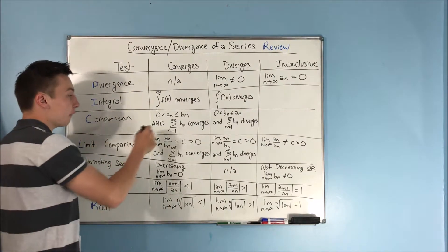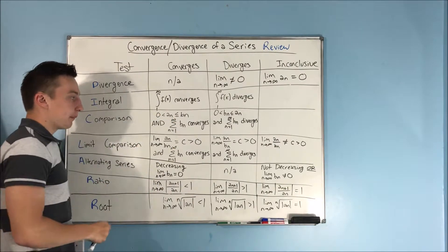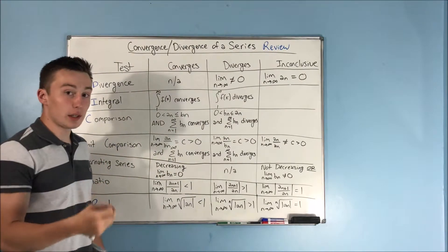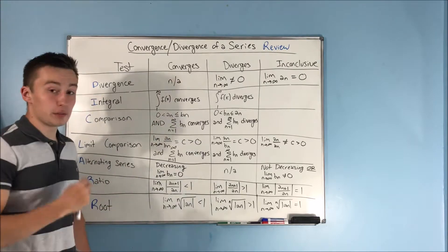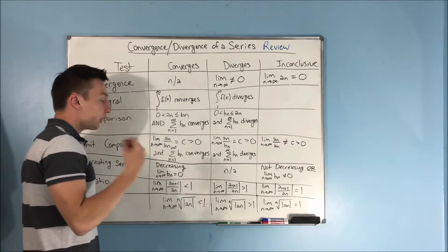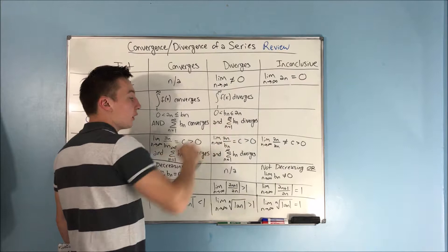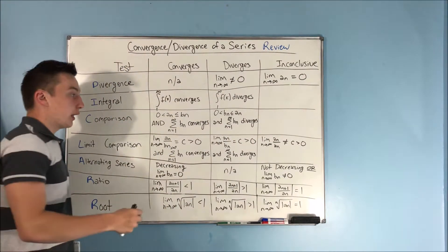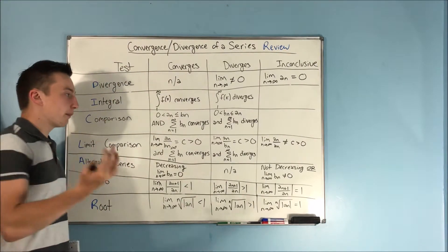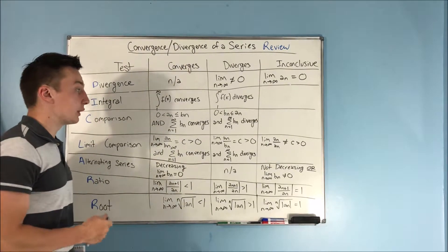The comparison test should be one of the most familiar to you, because we've done this with improper integrals. If you have an a sub n that is in between zero and b sub n, and you know that the sum from n equals 1 to infinity of b sub n converges, then your series with a sub n is also going to converge. On the contrary, if a sub n is greater than or equal to b sub n, which is greater than zero, and the sum from n equals 1 to infinity of b sub n diverges, then a sub n is also going to diverge.